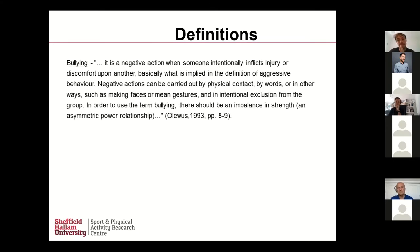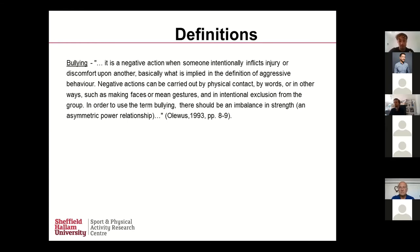The most classic and seminal definition of bullying — cited somewhere upwards of maybe 5,000 times now in the research base — is Olweus's: a negative action when someone intentionally inflicts injury or discomfort upon another, basically what is implied in the definition of aggressive behaviour. These negative actions can be carried out by physical contact, words, or in relational ways such as intentional exclusion from the group. Essentially, what we're looking at with bullying is an imbalance, either in physical strength or in some other form of power.